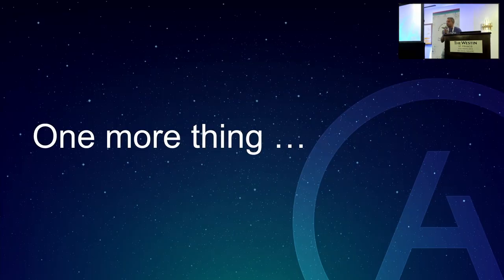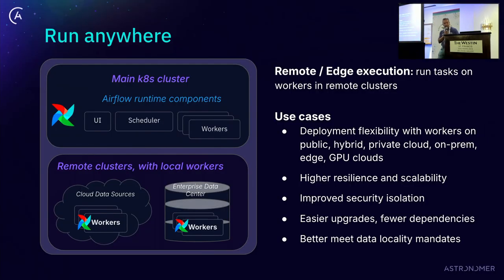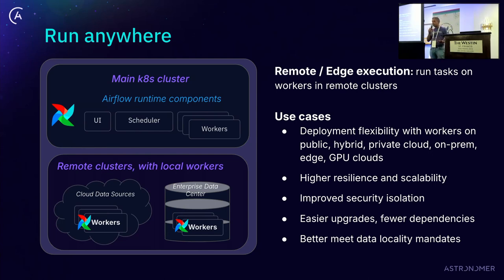Separating this into client-server enables a few other things. One key change built on this model is being able to run tasks anywhere. You can run the Airflow server components on one computing cluster. And going forward, you'll be able to run Airflow workers on a completely different remote cluster — whether it's on the same cloud, a different cloud, your enterprise private cloud, an edge network — literally anywhere. That's the key change enabled by Airflow 3: remote execution of tasks. Jens is also working on edge execution, which is the foundation of how we'll enable very remote capabilities.